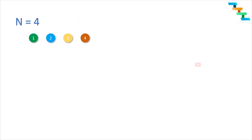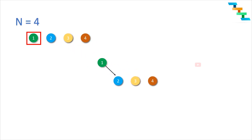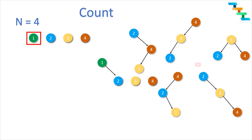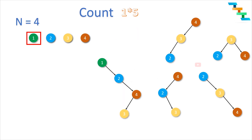For n equals 4 we will derive the number of unique binary search trees. We have nodes 1, 2, 3, 4 sorted in ascending order. If we pick 1 as the root node, then 2, 3, 4 fall under the right subtree because they are all greater than 1. With 3 nodes on the right side, and since n equals 3 gives 5 unique subtrees, we can form 5 unique subtrees with root node 1.